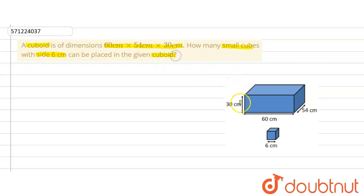So we are given a cuboid with the given dimensions which will look something like this. The length is 60, the breadth is 54, and the height is 30 cm. And the cube of dimension 6 cm—all the sides of the cube are same, so all the edges are of the same length, that is 6 cm.